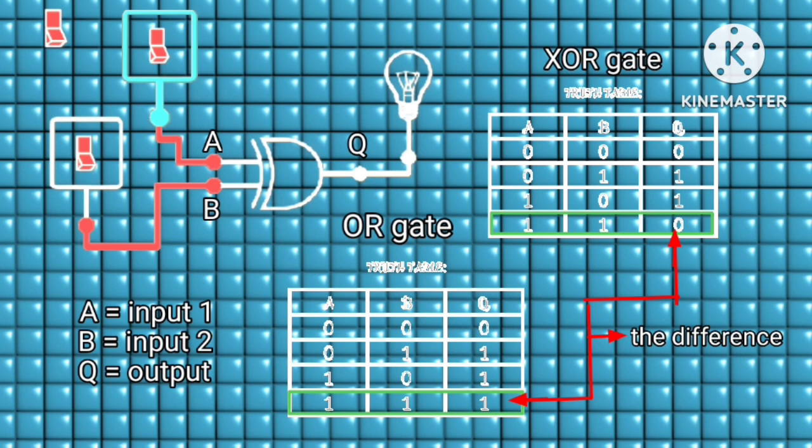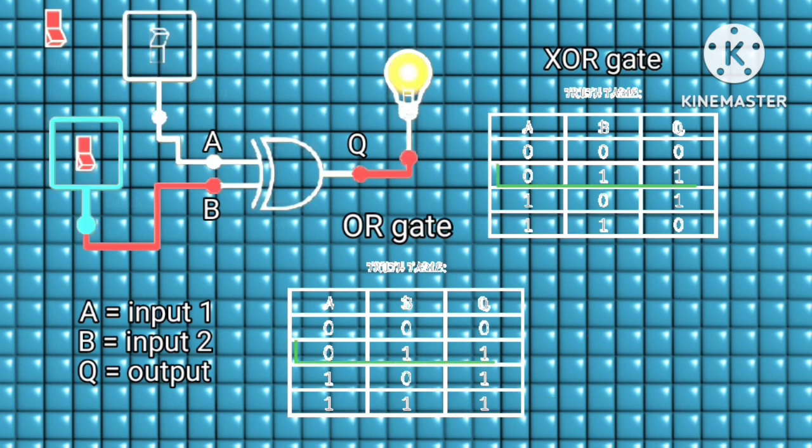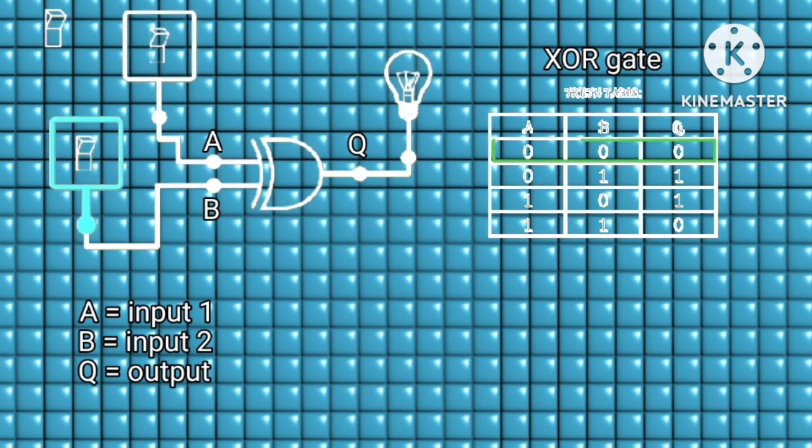Which only implies that it is only high if inputs A or B are high—then the output will be high. Otherwise, any other actions will result in a low output.